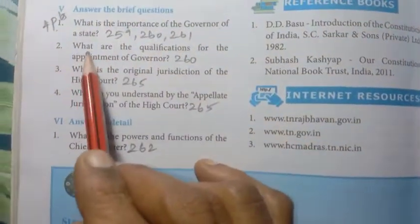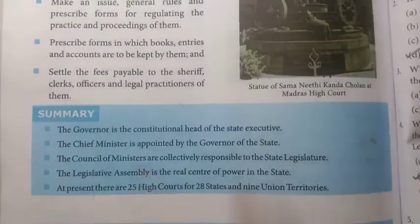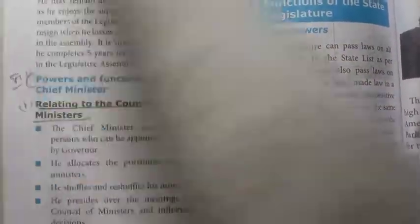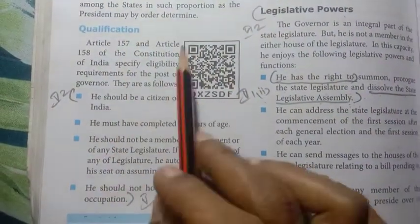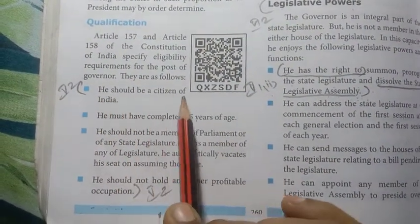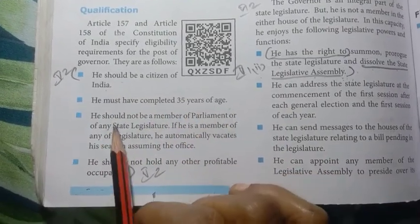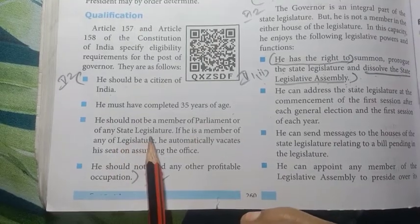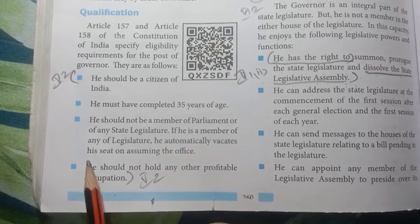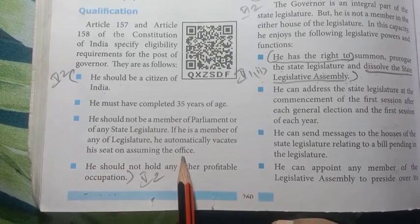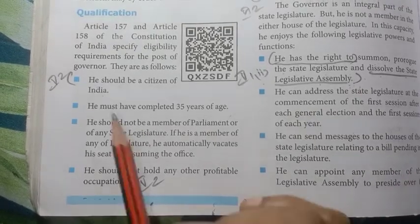Second question: what are the qualifications for the appointment of governor? Page number 260. He should be a citizen of India; he must have completed 35 years of age; he should not be a member of Parliament or of any state legislature – if he is a member, he automatically vacates his seat on assuming office; he should not hold any other profitable occupation. Four points total.